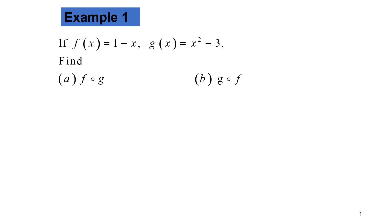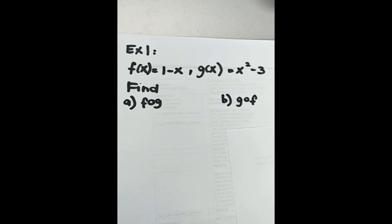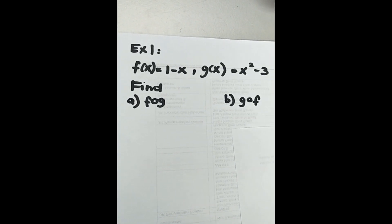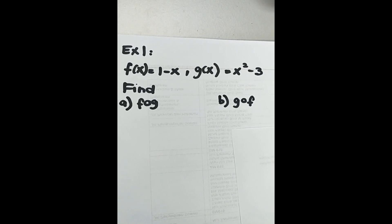Example 1. If f(x) is equal to 1 minus x, g(x) is equal to x squared minus 3, find: (a) f composite g, (b) g composite f. We are given f(x) = 1 minus x, g(x) = x squared minus 3.